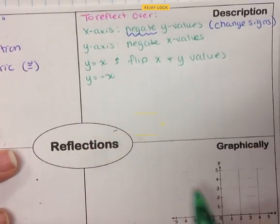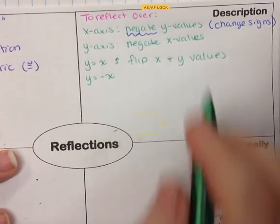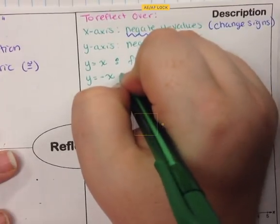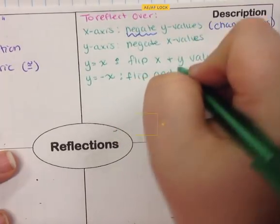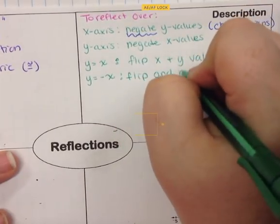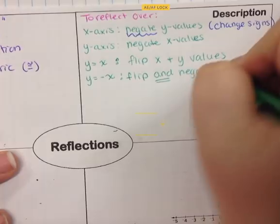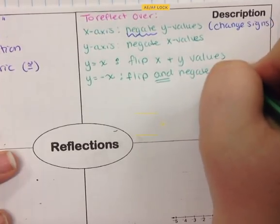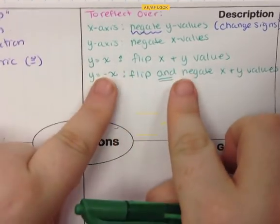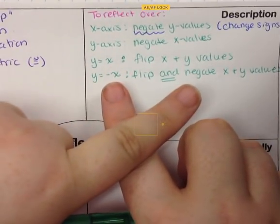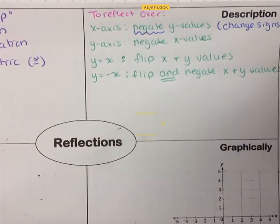For y equals negative x, the diagonal going negative, you do the same thing — you flip — but you also negate both the x and y values. So you flip their positions and then change their signs. If you have positive x's, you'll have negative. If you have positive y's, you'll have negative. And again, if you have negatives, they become positive.